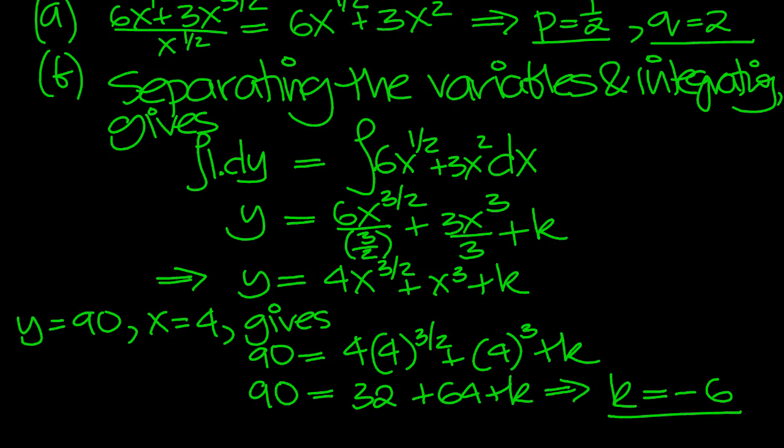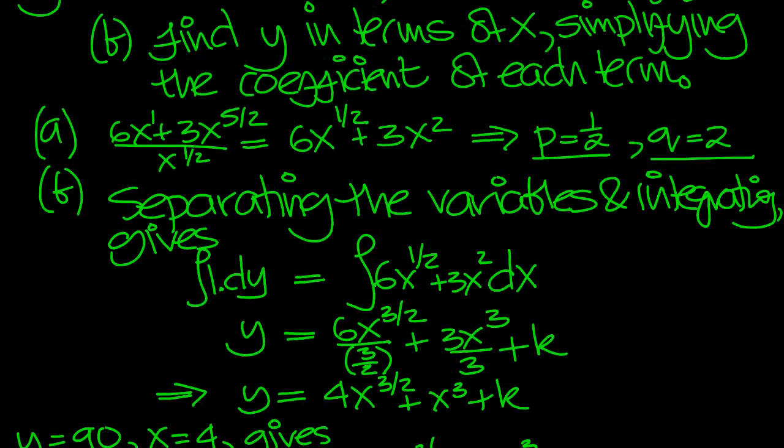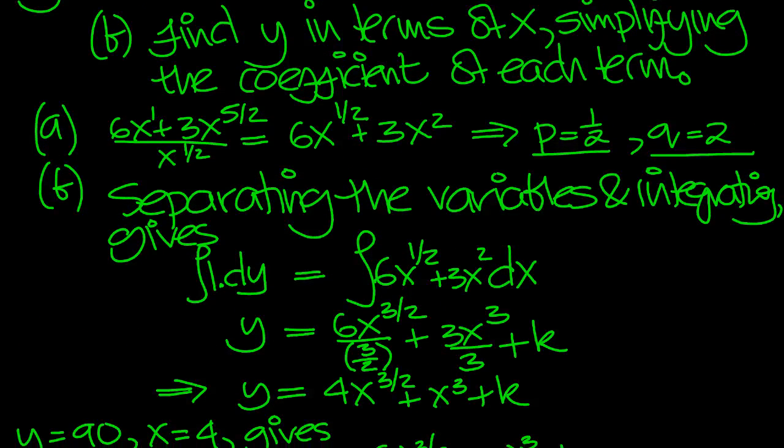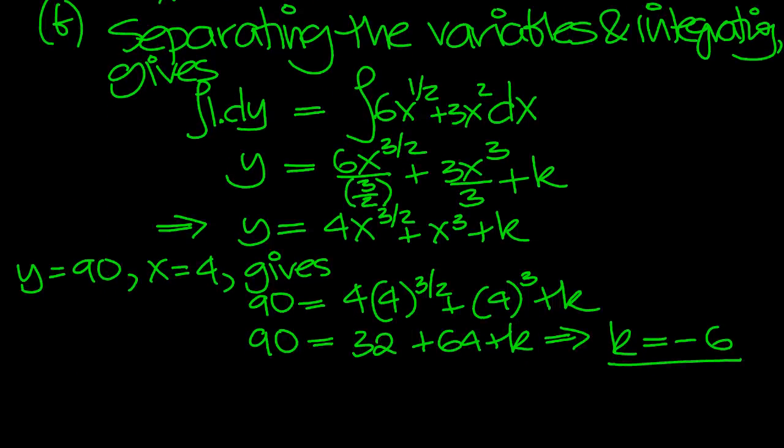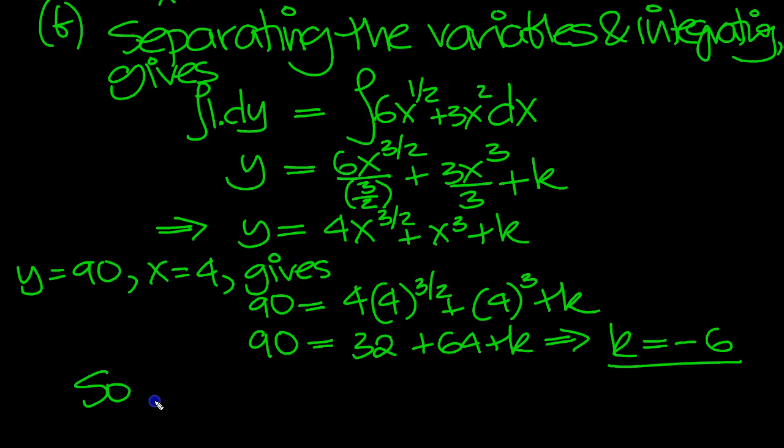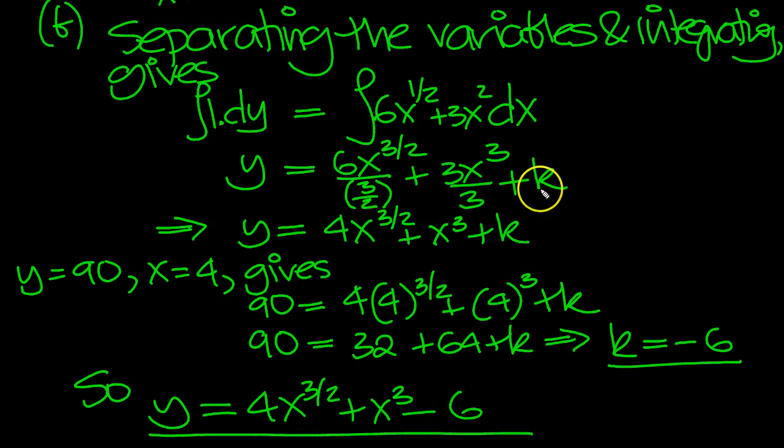So let's look back at the question then. Find y in terms of x simplifying the coefficient of each term. So let's write it down then. y equals 4x to the 3 over 2 plus x cubed minus 6. k was minus 6 in here.